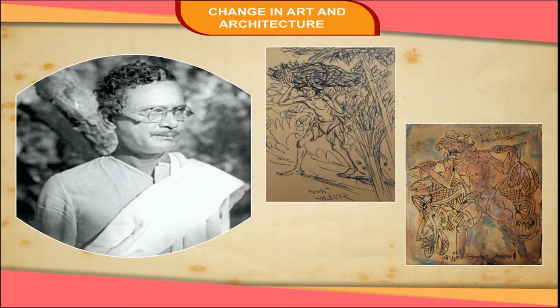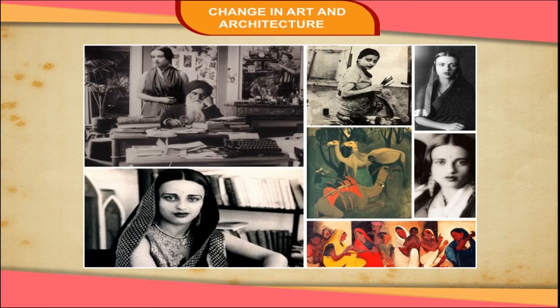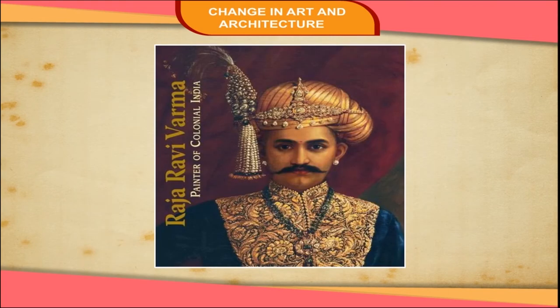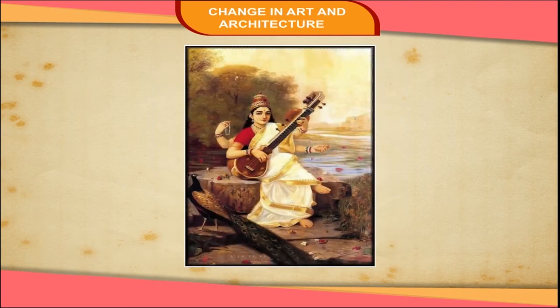Paintings by Nandalal Bose portrayed scenes from Indian mythology and the everyday life of artists and craftsmen. Amrita Shergil depicted the lives of common people. Hindu themes, royal portraits and court scenes were common themes. Raja Ravi Verma was an important painter in South India. Many of his life-like paintings feature Hindu gods and goddesses and mythological stories.